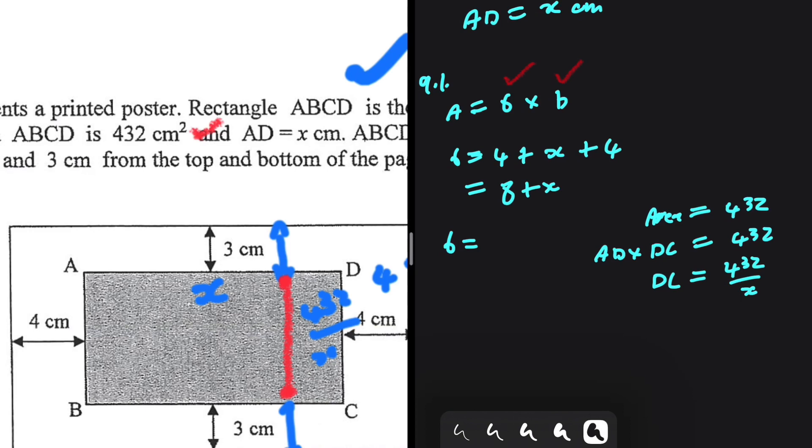The breadth of the poster is 432/x + 3 + 3. These 3 from D to the poster edge and this 3 from C to the poster edge, plus 432/x which is the length of DC. So the breadth equals 432/x + 6.